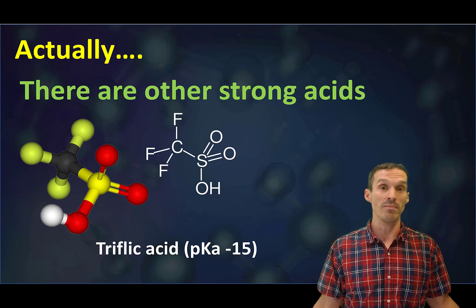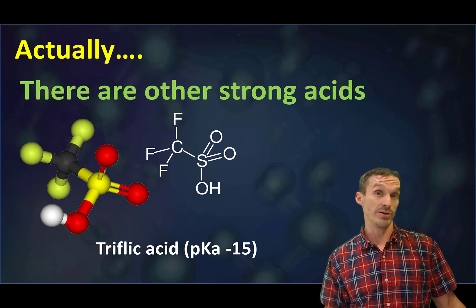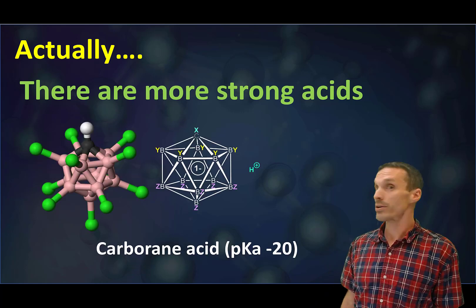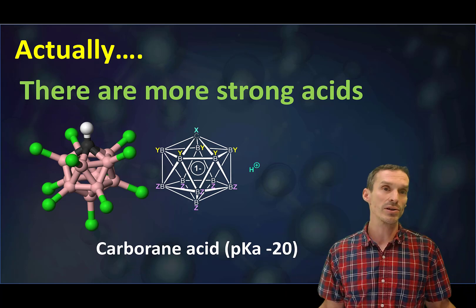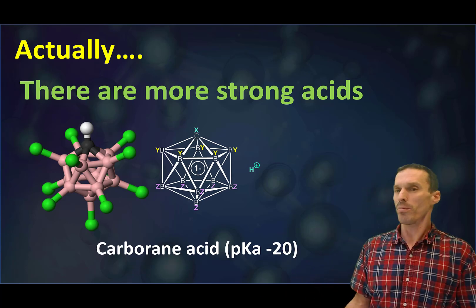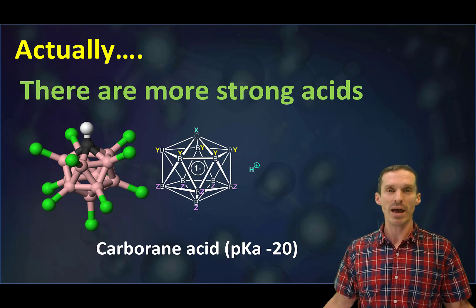If we're talking about like how strong we can go, this compound here, triflic acid, pKa minus 15, pretty strong. Not the strongest one. Carborane acid, this is like this boron cluster, it's actually sort of permanently negative charge, pKa minus 20.